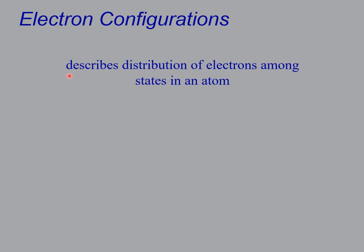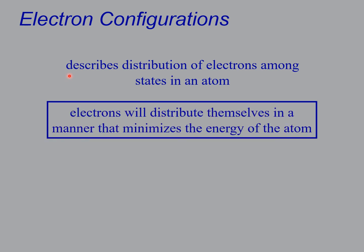Now this distribution or how we spread them out depends on two things. Number one, electrons will distribute themselves in a manner that minimizes the energy. So I was saying mother nature is a lazy slob. This focuses on the lazy part. So the idea is that you put electrons in the lowest energy state that is available and then just work your way up.